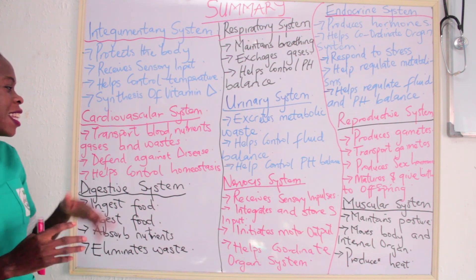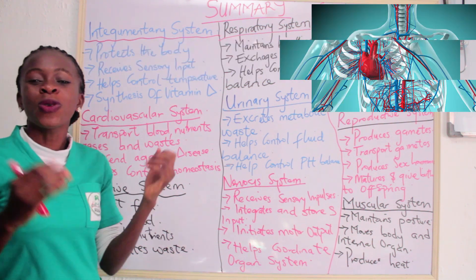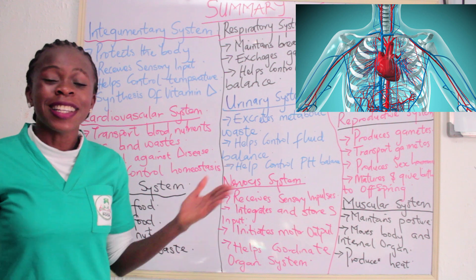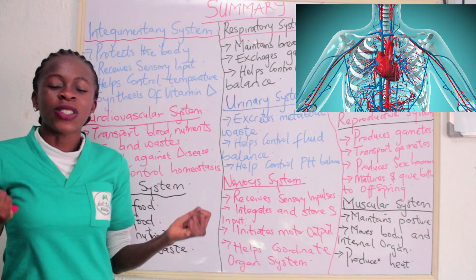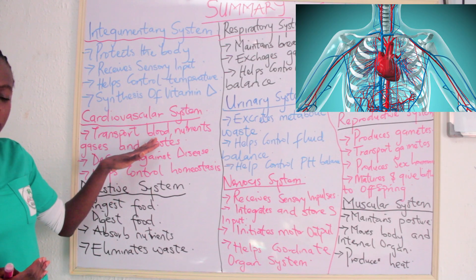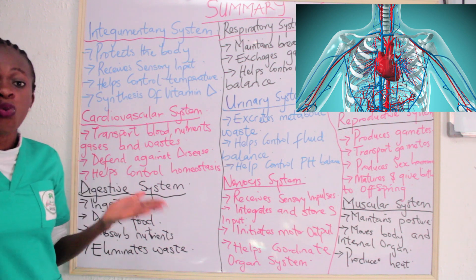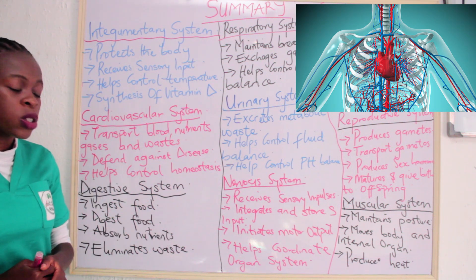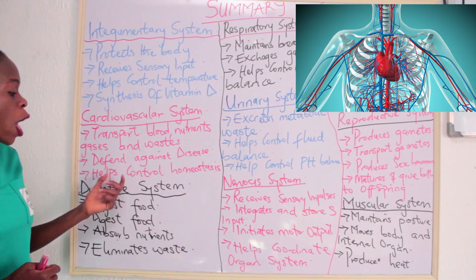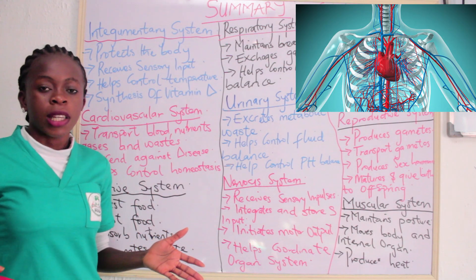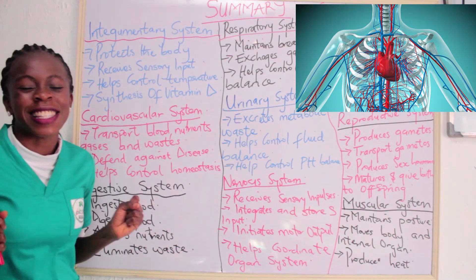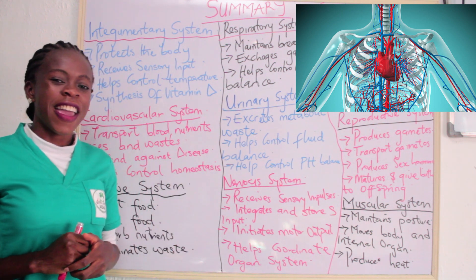The next system is the cardiovascular system. Most of us are familiar with it — whenever we hear 'cardio,' what comes to mind is the heart. The cardiovascular system helps to transport blood, nutrients, gases, and waste. It also helps to defend against diseases and helps to control homeostasis, ensuring that the body remains balanced.